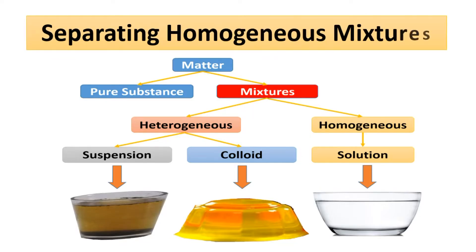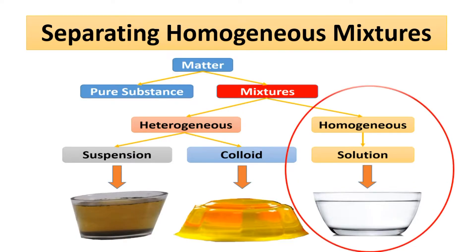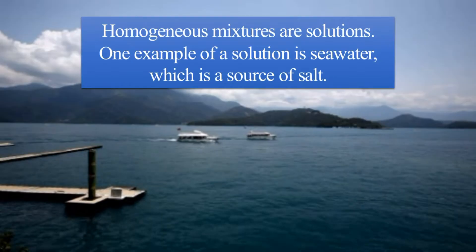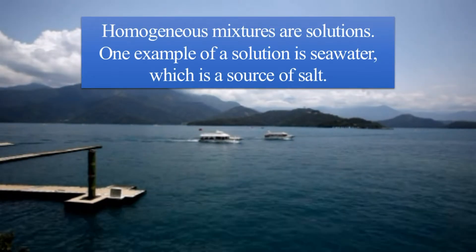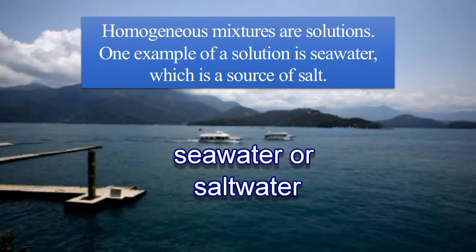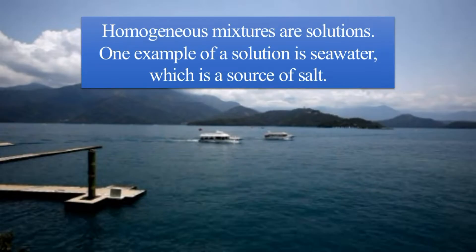Separating homogeneous mixtures. Homogeneous mixtures have components that are evenly dispersed, so their components are not easy to identify. However, it doesn't mean that their components cannot be separated. One example of a homogeneous mixture is seawater, which is the source of salt. How do you think salt is collected from seawater?